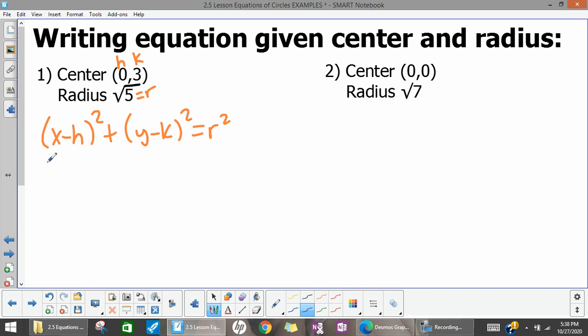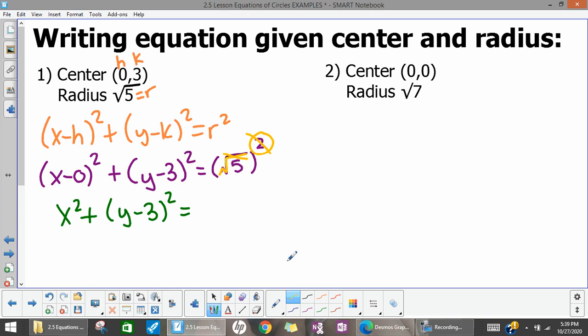And so then we just plug in 0 for h and 3 for k, and we plug the square root of 5 in for r. I'm going to actually put that in parentheses because I need to square it. Then I can clean this up a bit. x minus 0 is just x, so that's x squared. y minus 3 squared, that's good. And then the square root of 5 squared. Before when we were solving for d for distance, it had a squared on it and we wanted to get rid of it, so we square rooted it because squares and square roots cancel each other. When we do the square root of 5 squared, those things cancel each other and we are left with 5. And there's our equation.